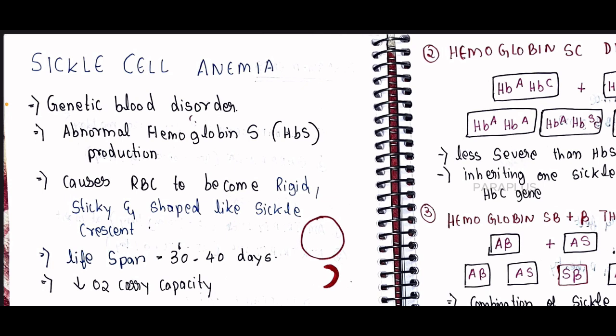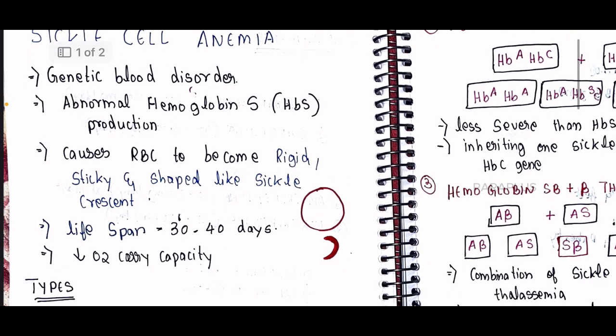HbS causes the RBC to become rigid, sticky, and shaped like a sickle or crescent. Because the cells are rigid and sticky, when they enter a blood vessel, they do not flow normally — instead they form a clot, leading to complications.